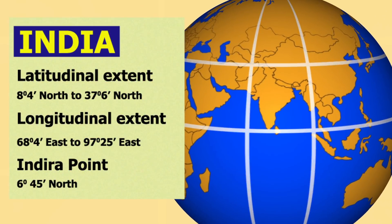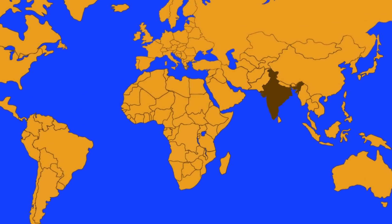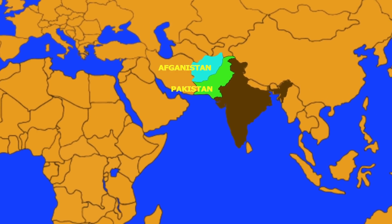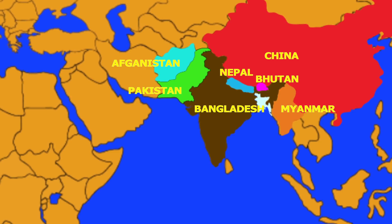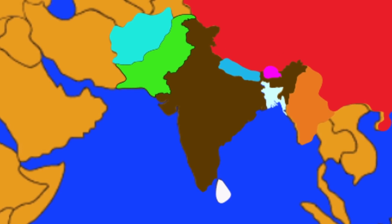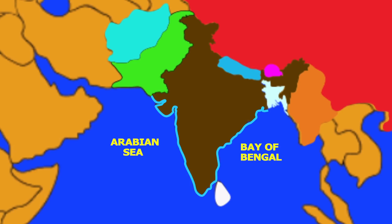Indira Point is the southernmost tip of India and it is located at 6 degrees 45 minutes north. India is surrounded by Pakistan and Afghanistan towards the northwest; China, Nepal, and Bhutan towards the north; Bangladesh and Myanmar towards the east; and Sri Lanka and Maldives towards the south. India has a coastline along the Arabian Sea towards the west and the Bay of Bengal towards the east.